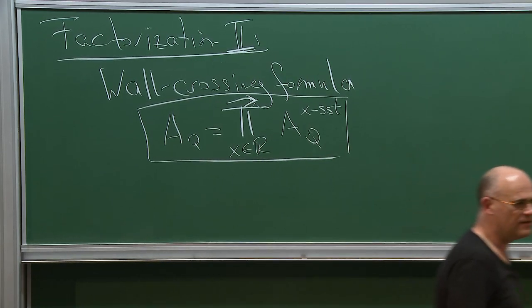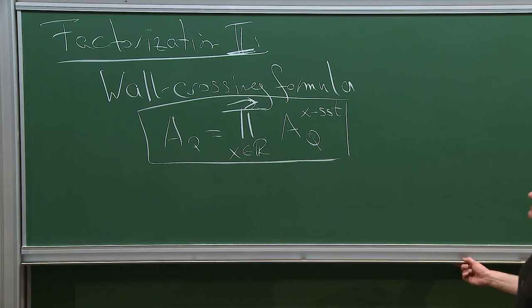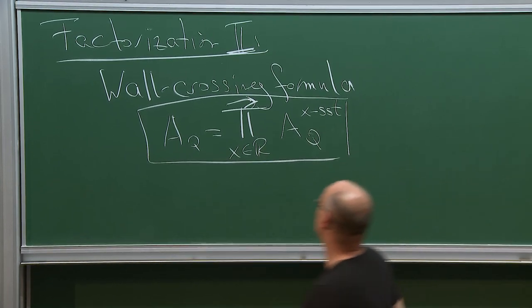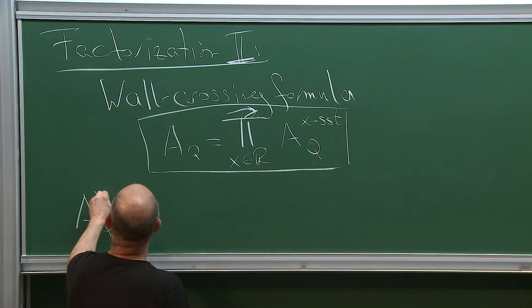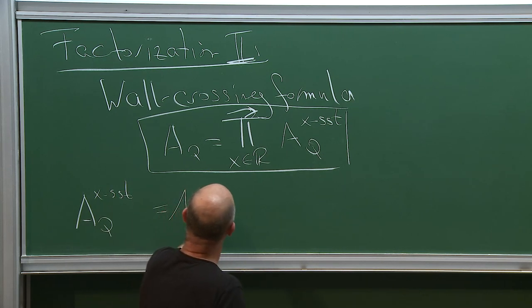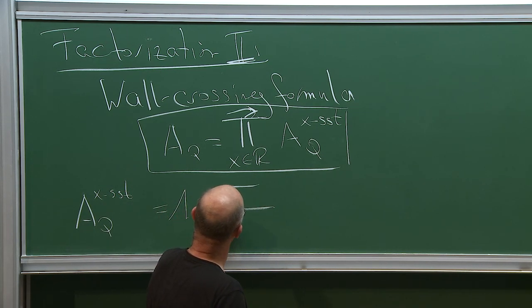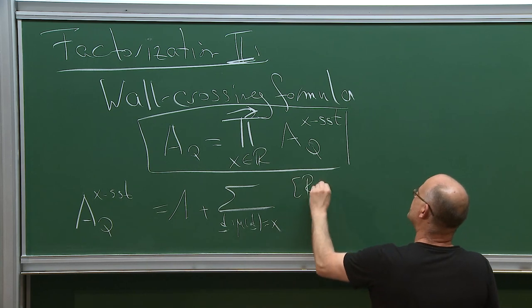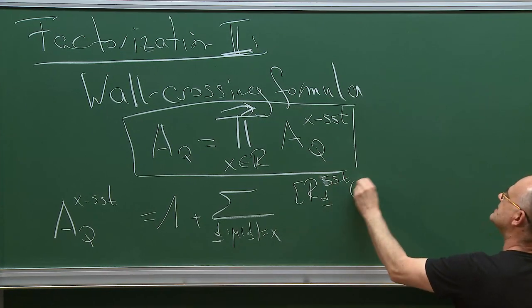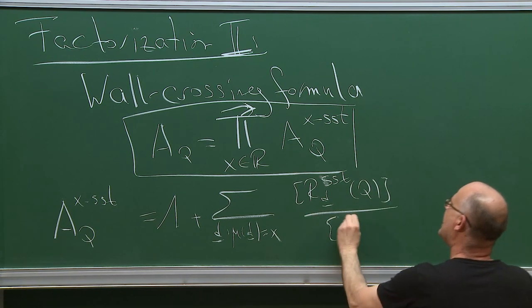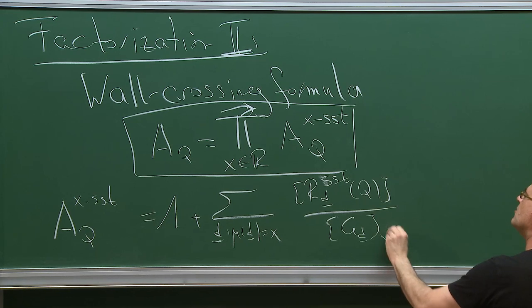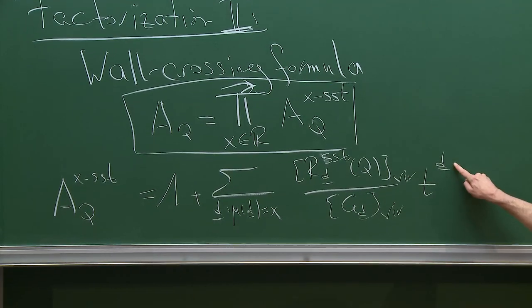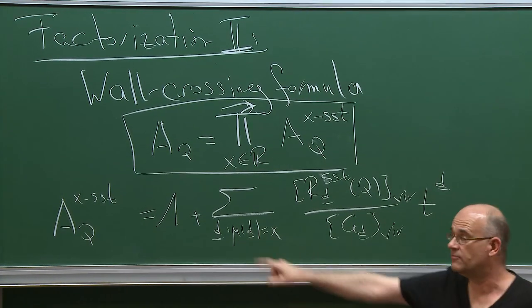This local motivic generating series is defined as the global motivic generating series but just looking at semi-stable representations of a fixed slope. So A_Q^{x,sst} is defined as one plus a sum over all dimension vectors of slope x, where we take the semi-stable locus inside the representation variety, act with the structure group, take the quotient of virtual motives and T^d. This only involves dimension vectors of a fixed slope.